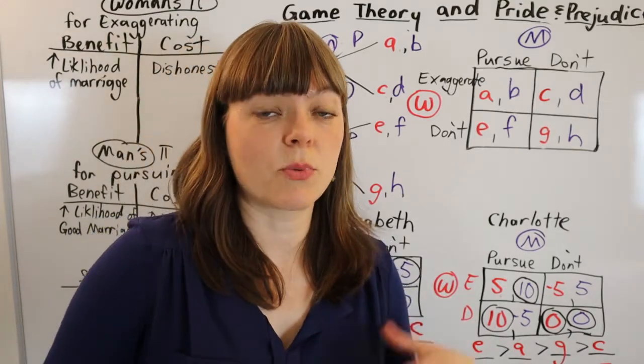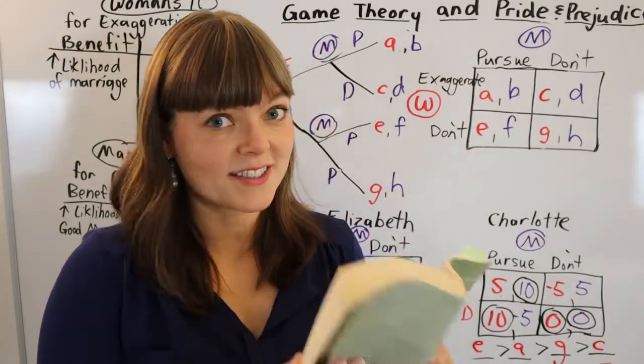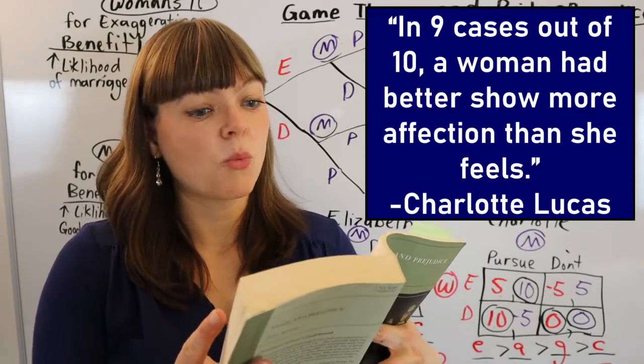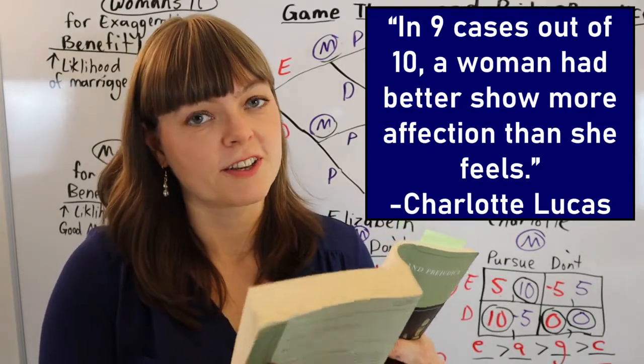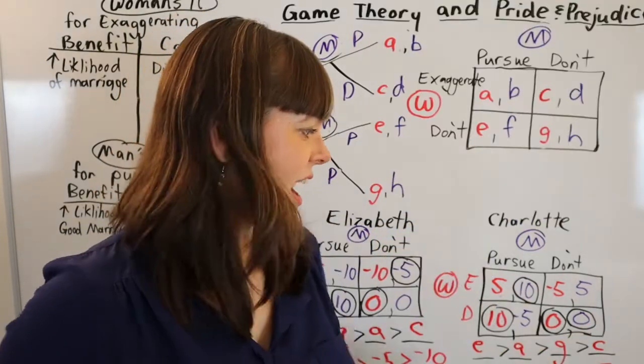As a matter of fact, this actually fits with what Charlotte says in the book. Charlotte says in nine cases out of 10, a woman had better show more affection than she feels. In which case I have to ask, is it possible to have no pure strategies Nash equilibrium over here?